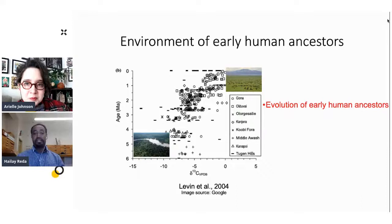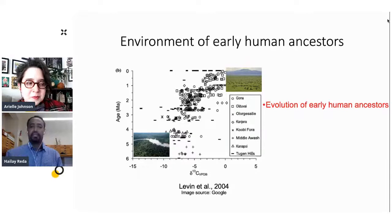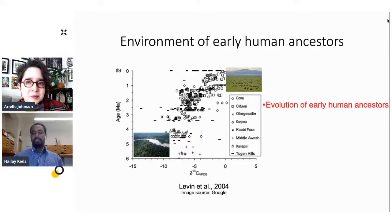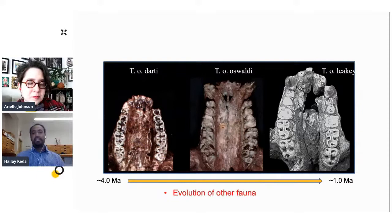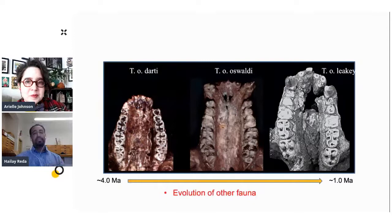Not only the early humans, but also other faunas were affected. Understanding the environment of early humans provides the bigger context to understand their evolution. The lineage of fossil monkeys was also affected by this change. From about 4 million to closer to 1 million years ago, this lineage adapted to the environment by changing its morphology — there is a general increase in size and a general increase in the complexity of its teeth — becoming more complex so that it was able to adapt to the changing environment.